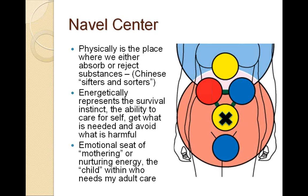The third center — the place of balance — is the intestines, the sifters and sorters in Chinese medicine. That's the gut instinct, the ability to get what we need and take care of ourselves — the balance between getting rid of what we don't want and getting what we do want. It's basically the emotional center of mothering or nurturing, where the child within gets cared for by me as an adult. If I don't get cared for as a child, I may as an adult have difficulty with self-care — feeling guilty for taking care of myself — and may become a people-pleaser, martyr, or enabler, taking care of everybody else to the neglect of myself. Those are the three primary energies in the physical world of our being.